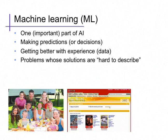Machine learning is often typified by problems whose solutions are hard to describe explicitly. For instance, consider face detection by a camera autofocus. What makes a face? How can we describe to a program that this patch of the image contains a face while this patch doesn't? It is hard to describe that in a set of rules.